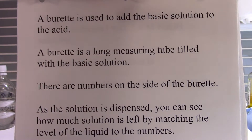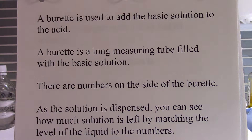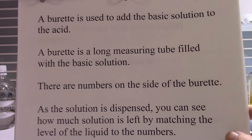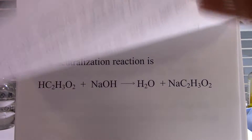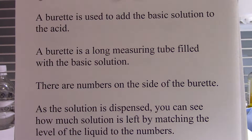A burette is used to add the basic solution to the acid. A burette is a long measuring tube filled with the basic solution, with numbers on the side. As the solution is dispensed, you can see how much is left by matching the liquid level to the numbers. Let me show you what a burette looks like — this one contains sodium hydroxide.